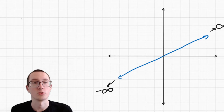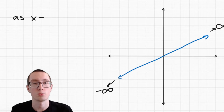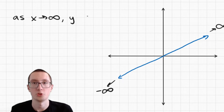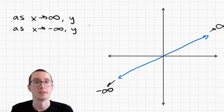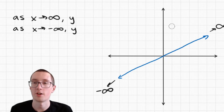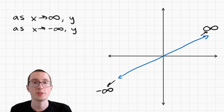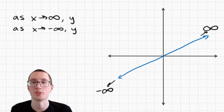So the way we'll write this is: as x approaches — and this little arrow means approaches — as x approaches infinity, y is going to do something. And then we'll do the same thing for this: as x approaches negative infinity, y is going to do something as well. So let's first ask ourselves, what is y doing as x approaches infinity?